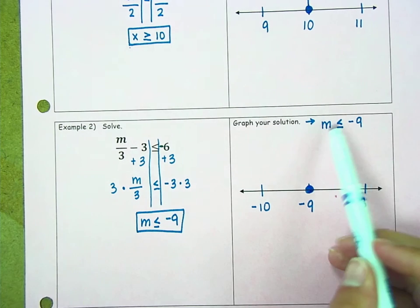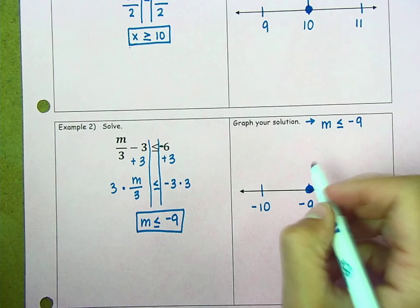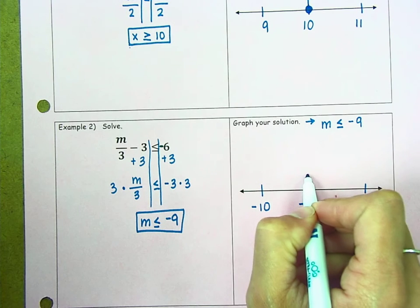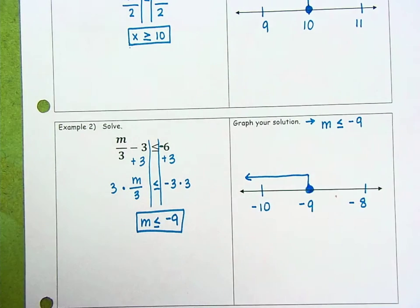And if any value of m has to be less than or equal to negative 9, that means all of our values are to the left of negative 9. Therefore, my arrow should be drawn to the left.